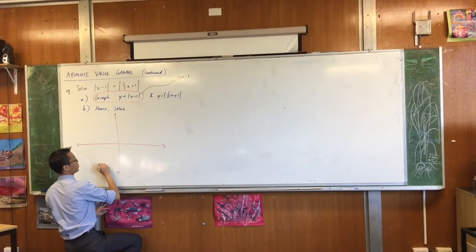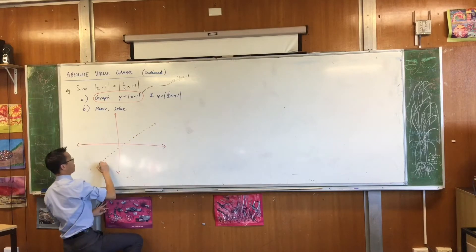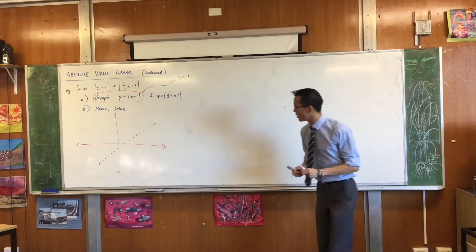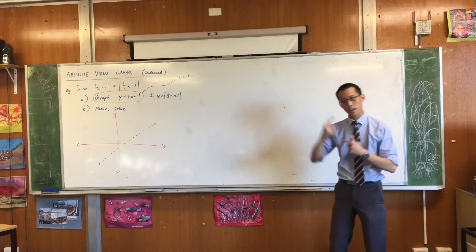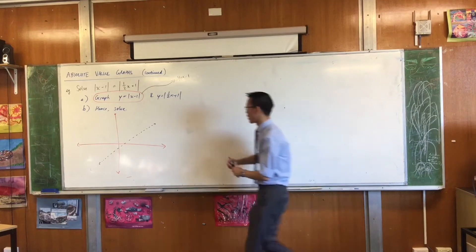This is what y equals x minus 1 looks like. Are you content with that? Are we good enough at recognizing straight lines that when you see x minus 1, you think gradient, y intercept, there's my picture. I'm going to label it as such.